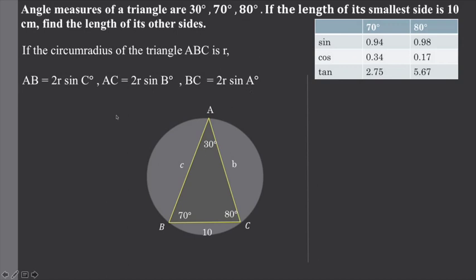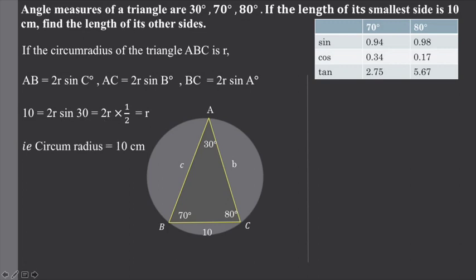We substitute: 10 equals 2R times sin 30. The value of sin 30 is 1/2. So 10 equals 2R times 1/2, which simplifies — the 2 cancels — giving us R equals 10. That is the circumradius.